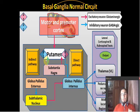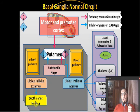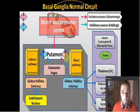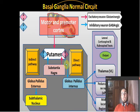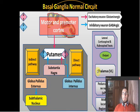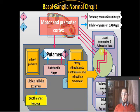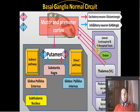The substantia nigra works by giving inhibition to the indirect pathway via dopamine D2 receptors — this allows the globus pallidus externus to be free and inhibit the subthalamic nucleus, removing excess excitation. Through the D1 receptors on the direct pathway side, dopamine inhibits the globus pallidus internus, removing the inhibition from the thalamus so that movement is facilitated.